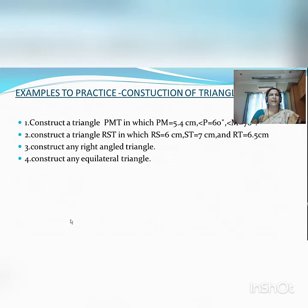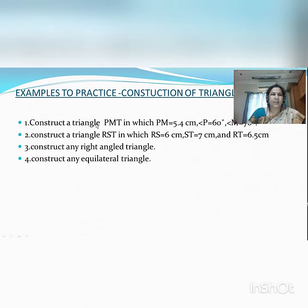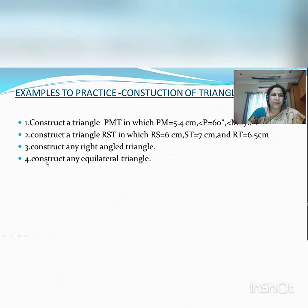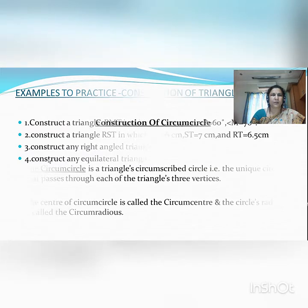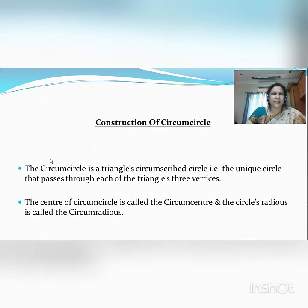You can practice these examples for construction of a triangle. In this example, one segment is given and two angles are given. In another example, all three sides of the triangle are given. In the third example, you have to construct any right angle triangle. In the fourth example, you have to construct any equilateral triangle. Based on these basic constructions, we are now going to construct a circumcircle.